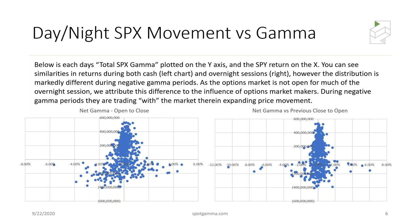One other interesting thing is this recent study showing open-to-close versus previous-close-to-open movement — overnight trading versus the day session. Each point represents how much gamma we calculated for a given day. What's so interesting is that you get the same profile of movement: overnight moves respect the gamma and fall into the same bucket as what happens during the day session.